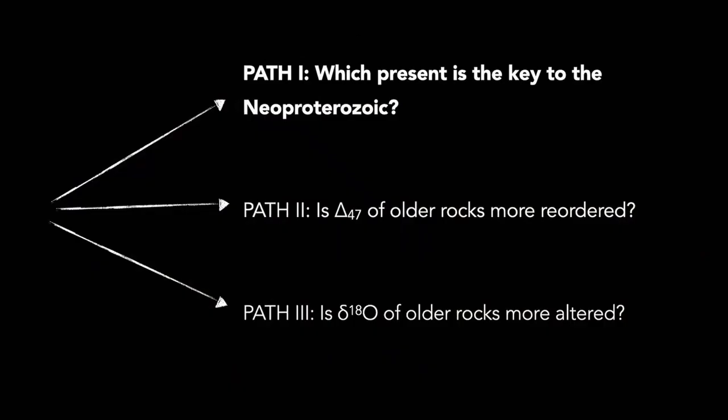What I'd like to do today is walk through the path we've taken for three approaches to address these challenges: first, which present modern analog is the key to the Neoproterozoic; then, is the clumped isotope composition of older rocks more reordered; and finally, is the delta-O18 of older rocks more altered.